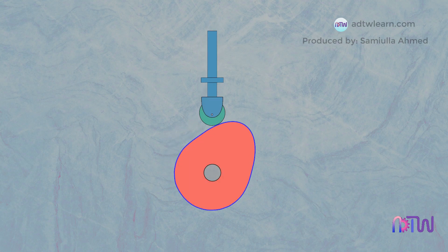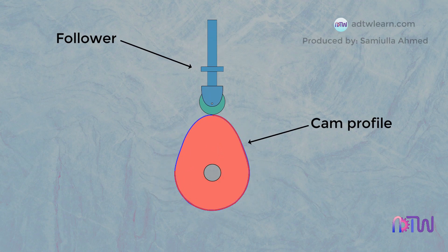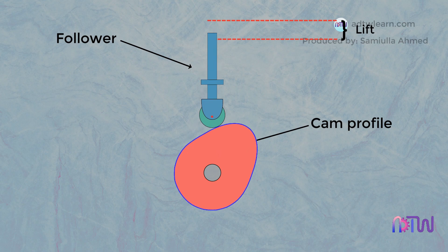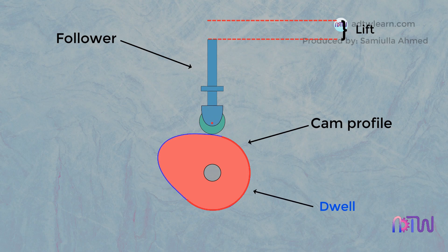Whenever the cam rotates, it lifts the follower. The motion of the follower depends on the cam profile. The highest distance traveled by the follower during operation is called the lift of the follower, and the time spent by the follower in its bottom-most position during operation is called the dwell of the follower.